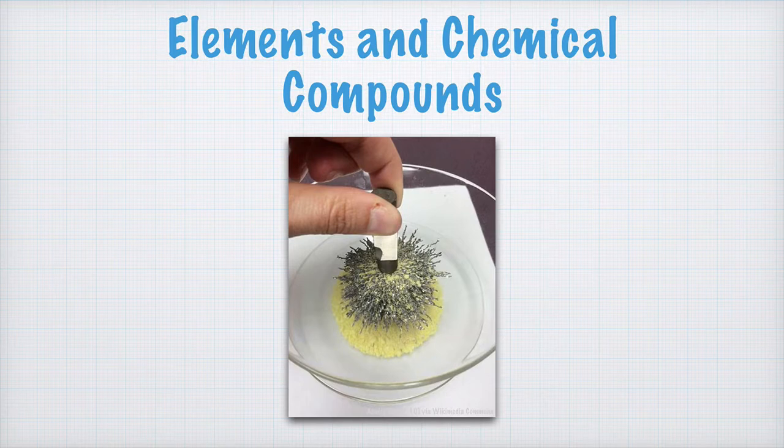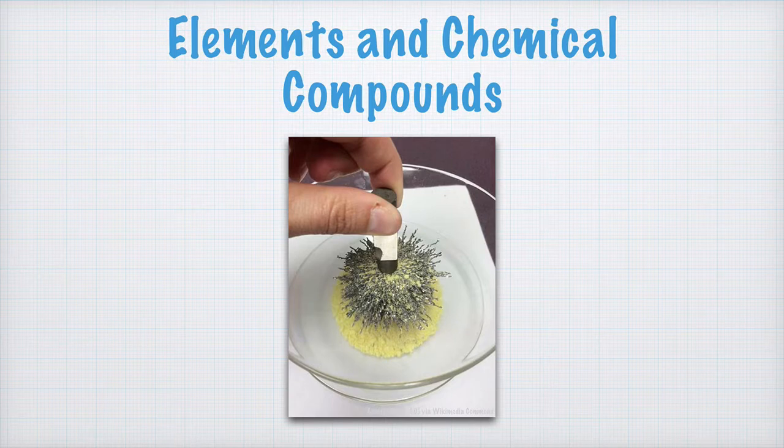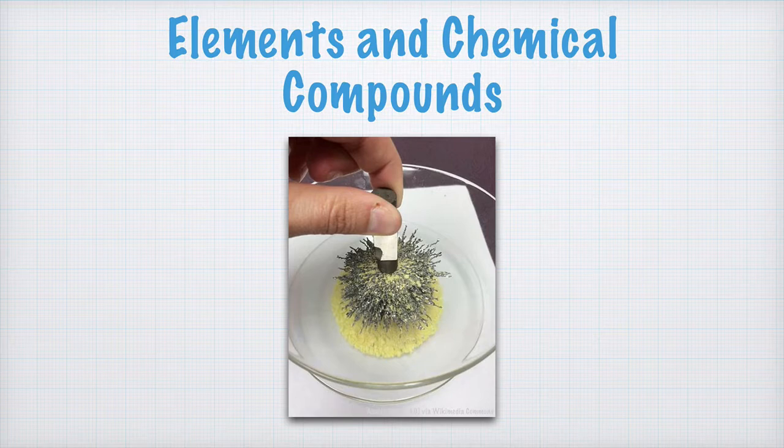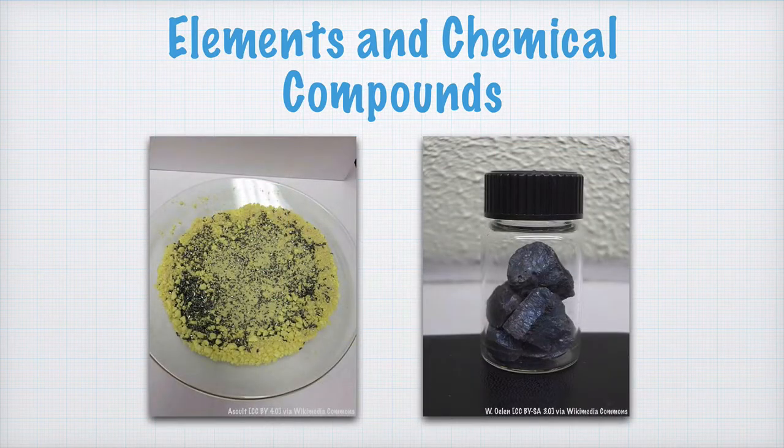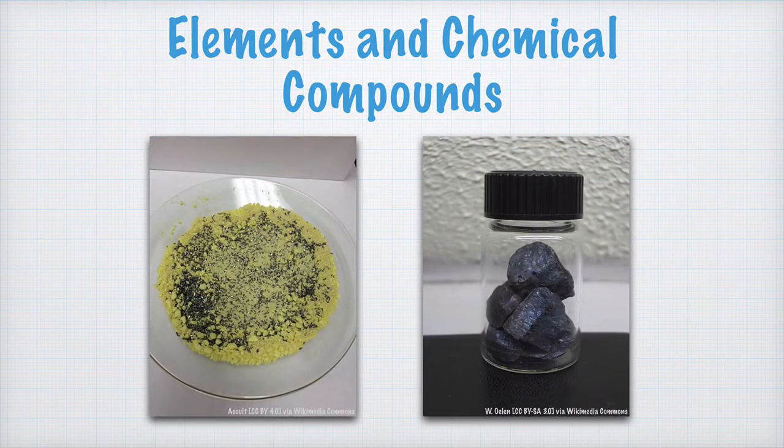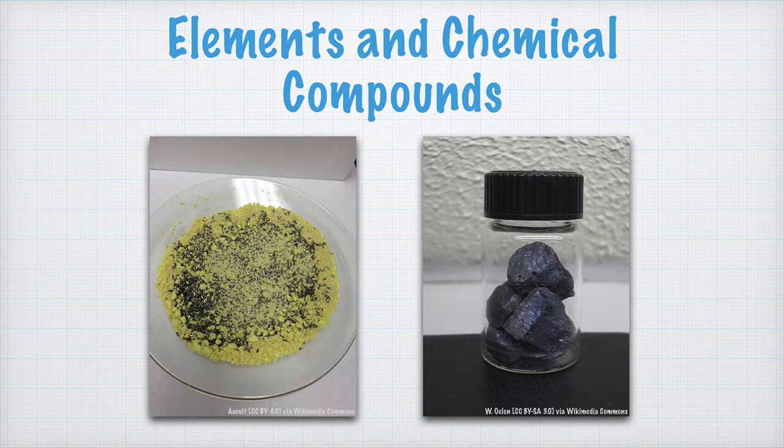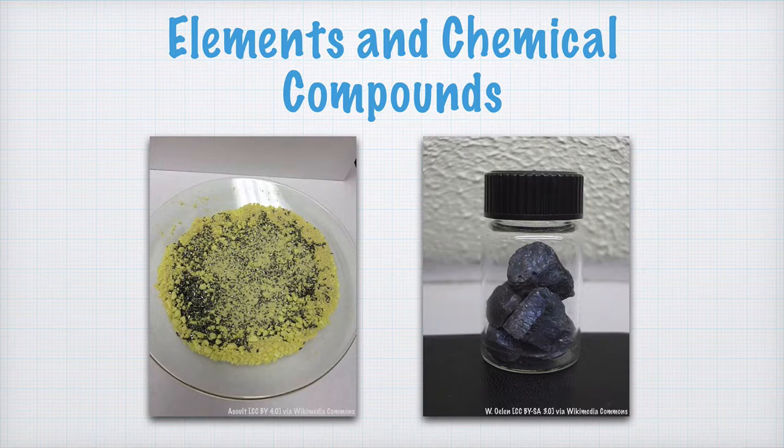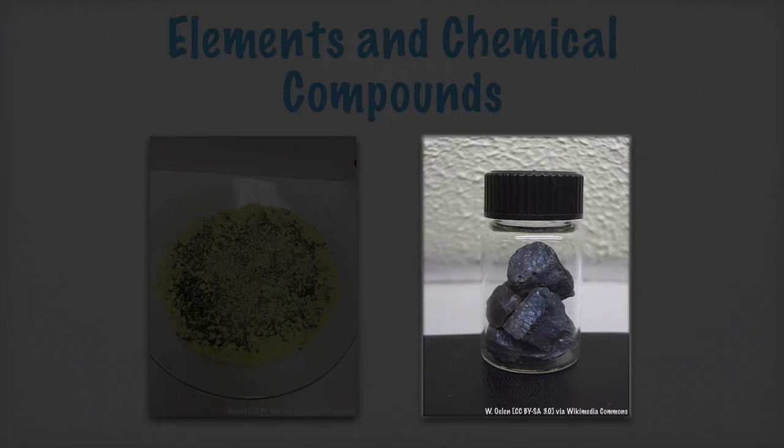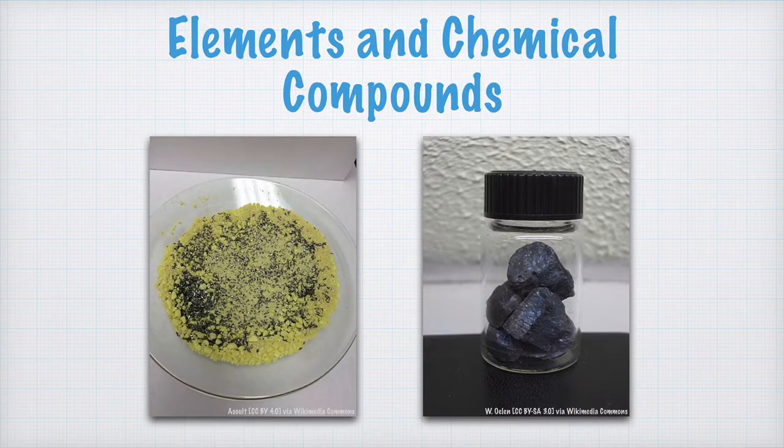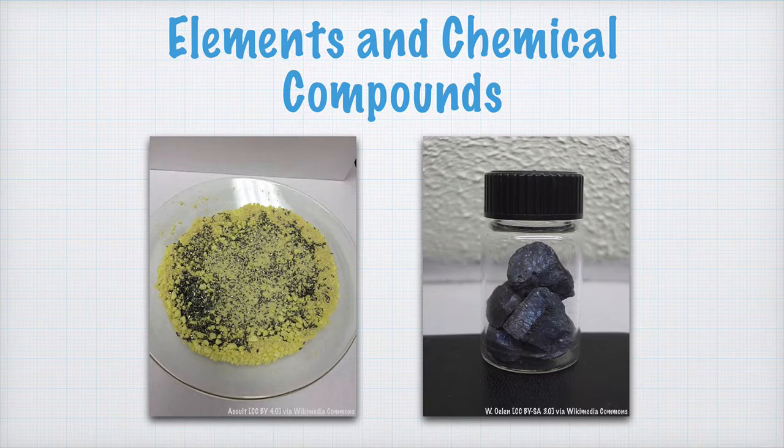But if you heat this mixture enough, things will start to happen. The sulfur reacts with the iron. You can see it in the lab because it glows and bursts and it becomes red hot too. And the stuff that's formed has different properties than the substances we started with. In this case, iron sulfide is formed. And that is what you see here to the right. The iron sulfide is not magnetic, and it has properties that differ from iron and sulfur. This means there has been a chemical reaction, and that a chemical compound between iron and sulfur has formed.